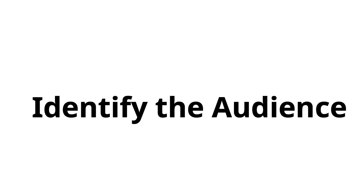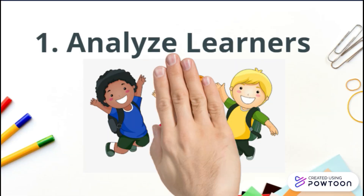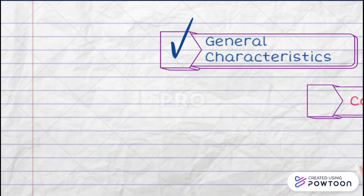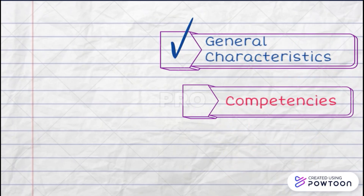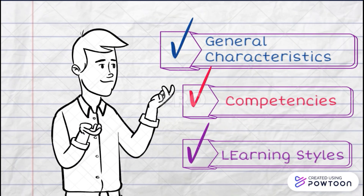As part of analyzing your learners, you must identify your audience. You must know the audience if you are to select the best medium to meet the objectives you have set. The audience can be analyzed in terms of their general characteristics, specific entry competencies, and learning styles.